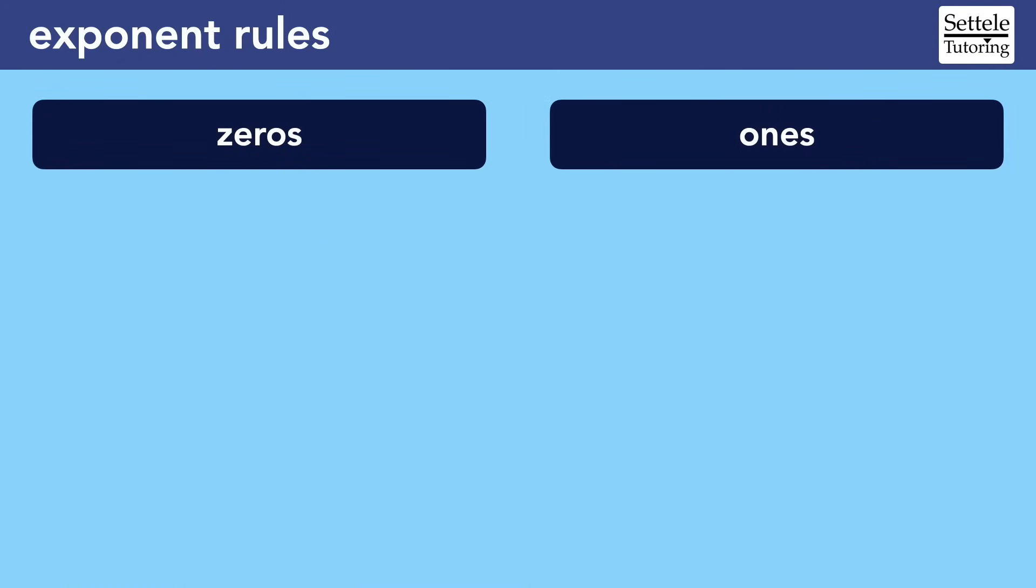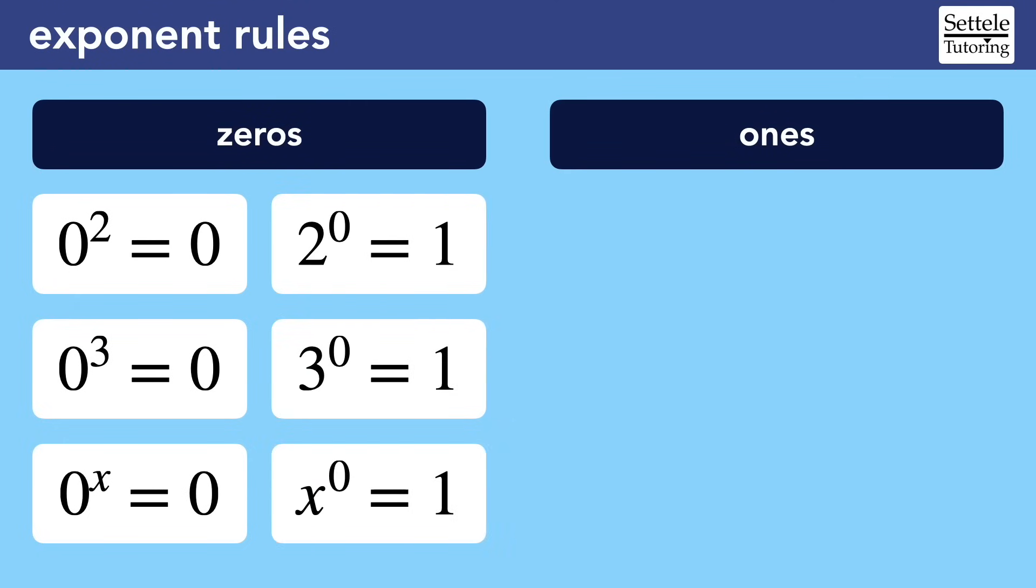It's extremely important that you instinctively know how 0s and 1s behave with exponents. Since exponents are multiplication, it makes sense that 0 raised to any exponent is 0, since anything multiplied by 0 will always be 0. It's harder, but very important, to remember that any base raised to the 0 power is 1. You will use this fact on every single SAT.